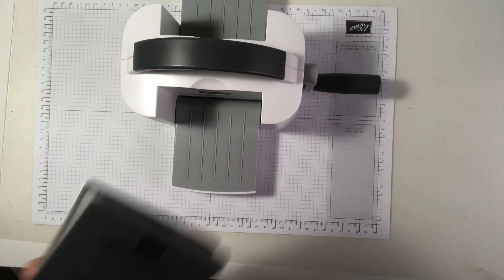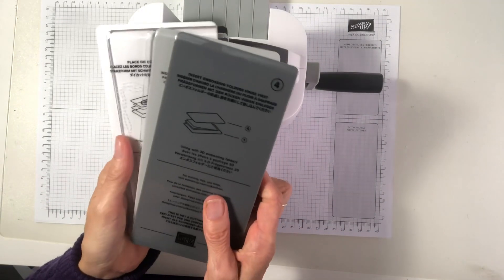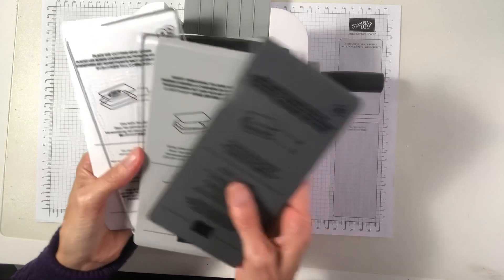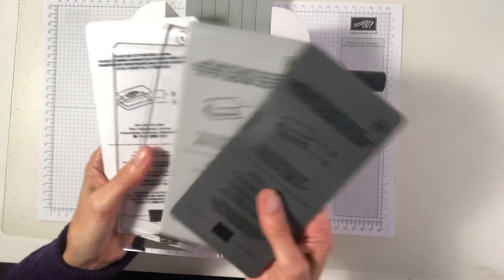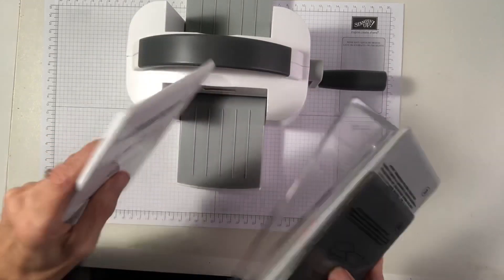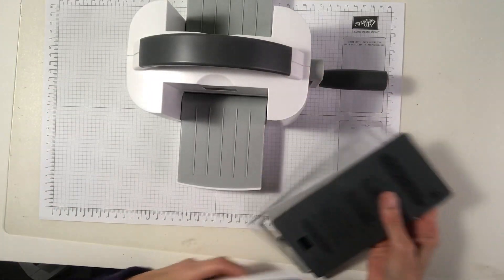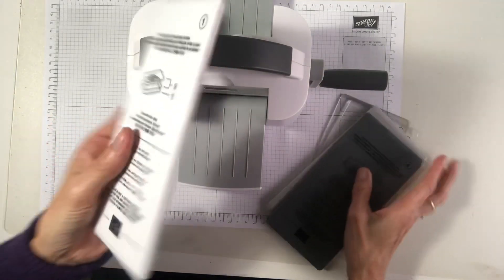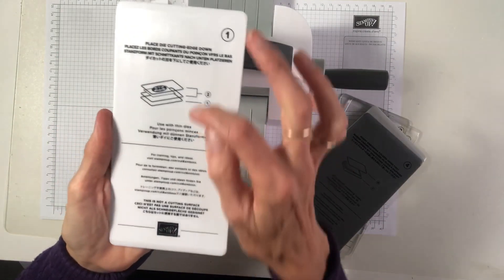We've got the plates included. So once again, with our plates, they're all numbered. So it makes it really easy when you come to emboss or cut. You see how thin it is. But it will show you.